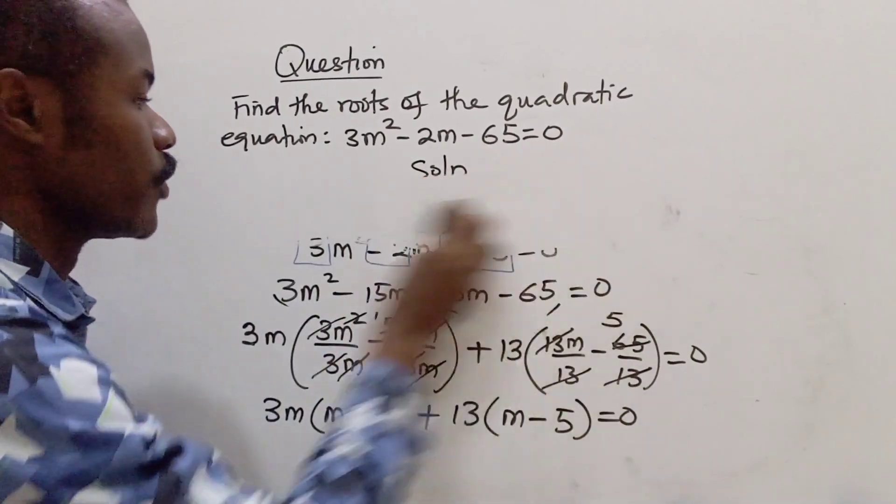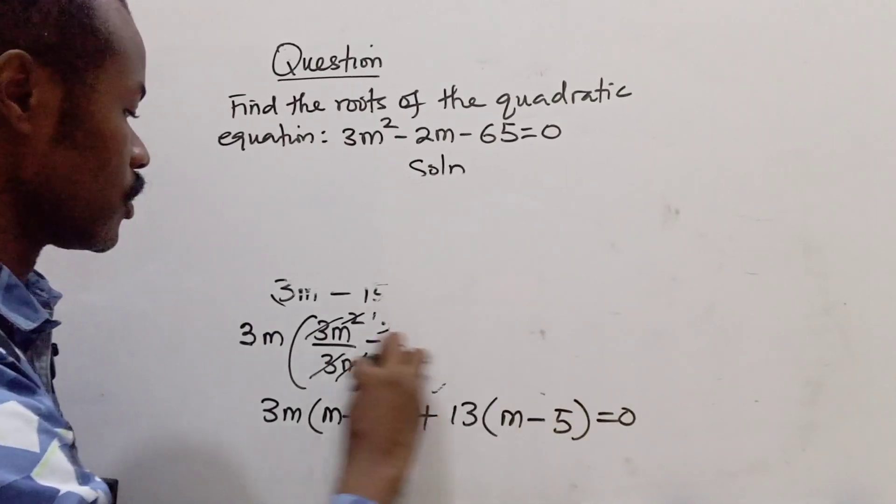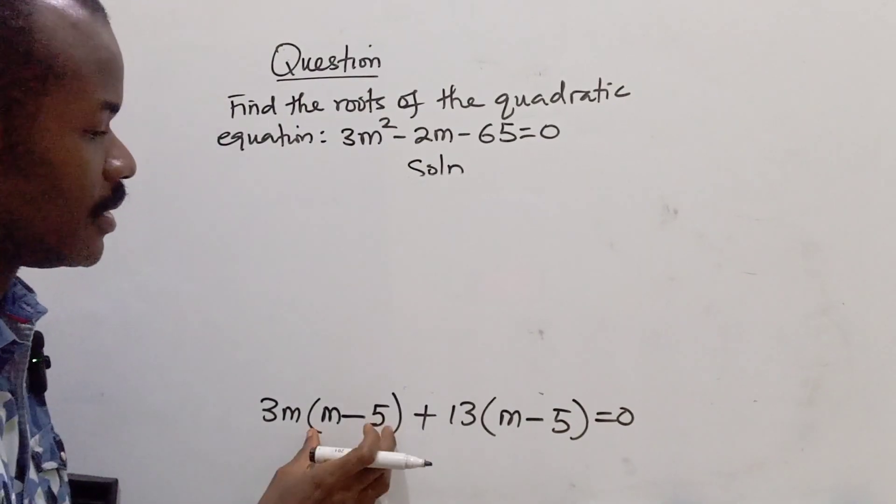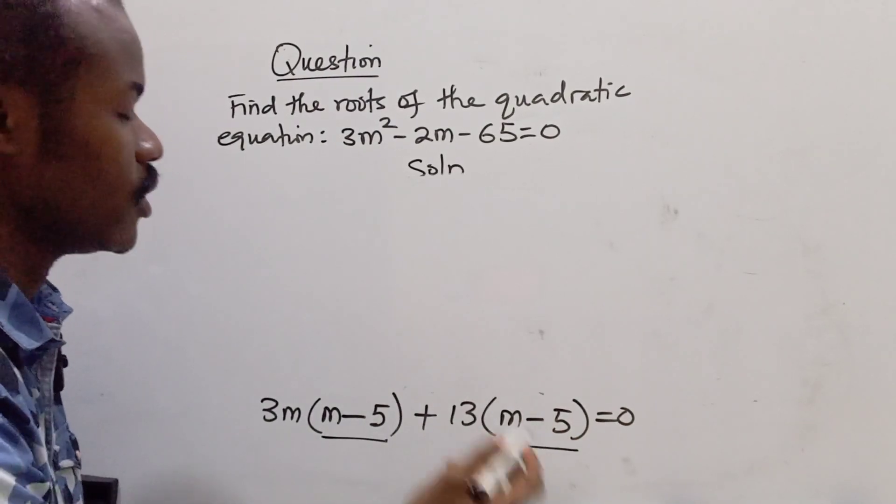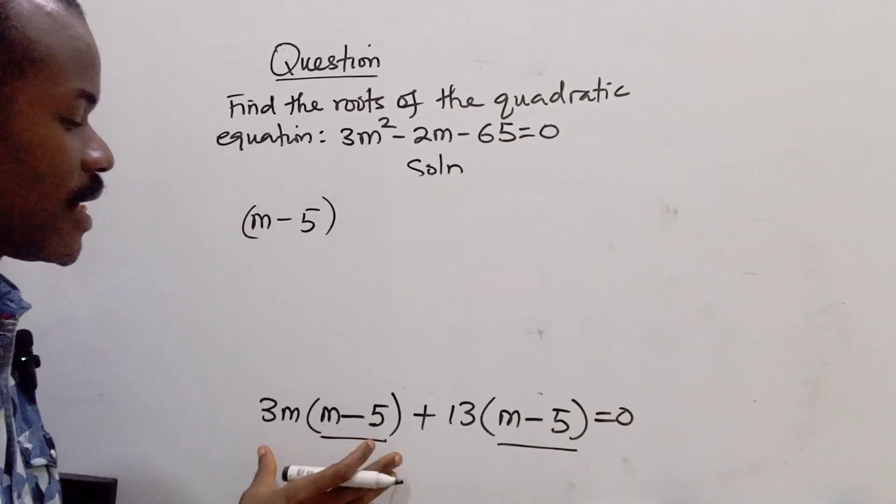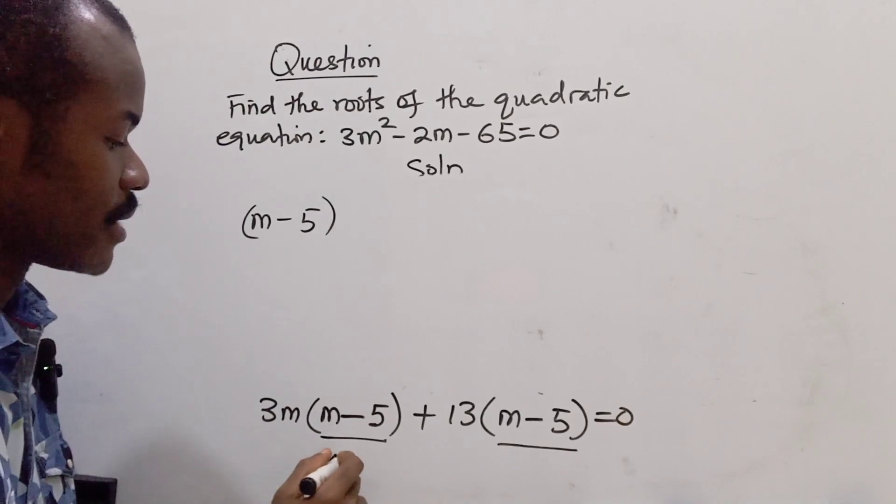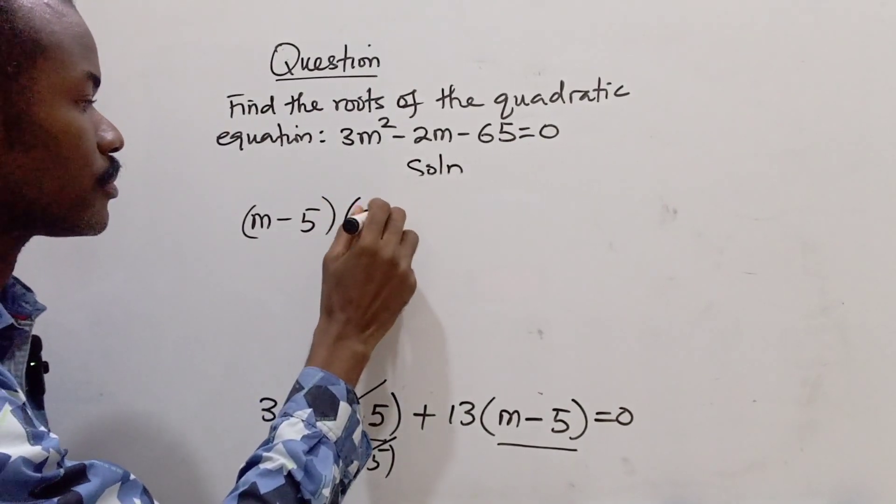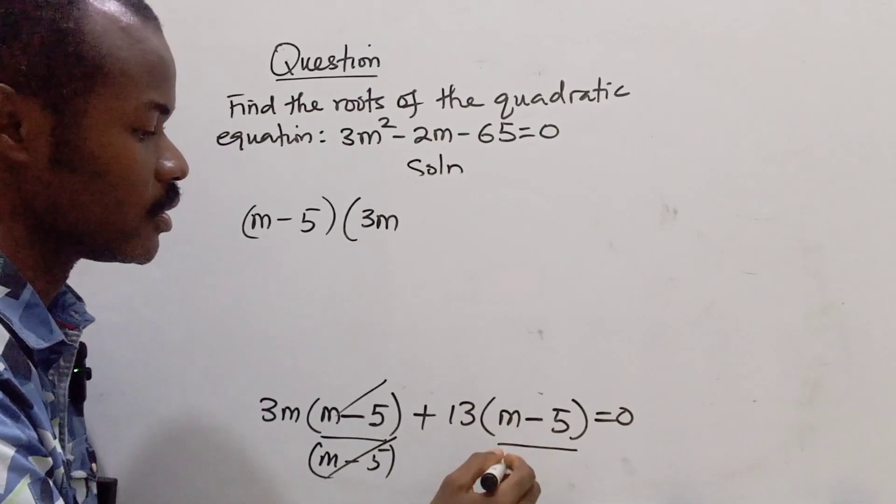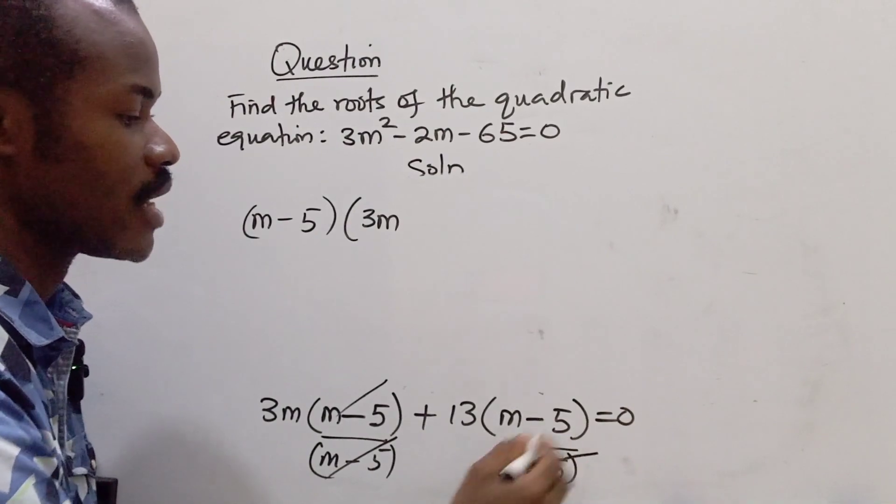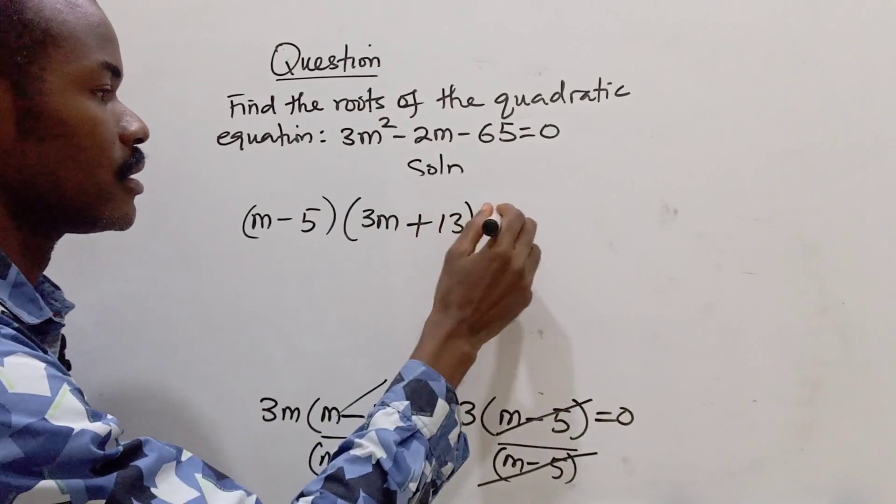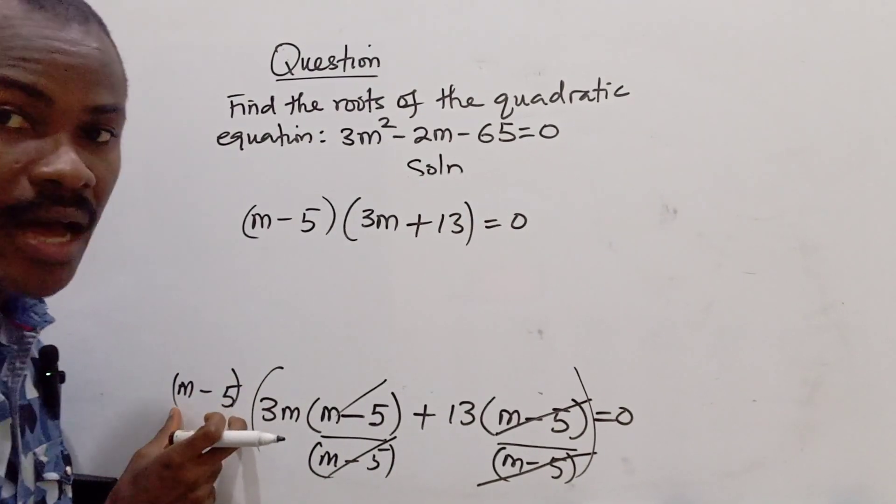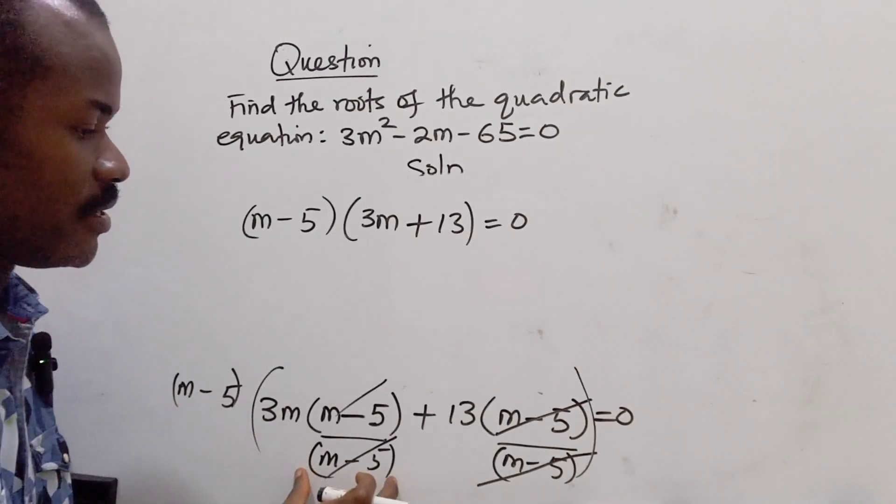Having gotten that, we can now do one more factorization. m - 5 is common, so I'm going to bring that out. If I divide this part by m - 5, this will cancel out and we are left with 3m. If I also divide this part by m - 5, this will cancel out and we are left with +13. So we have (m - 5)(3m + 13) = 0.